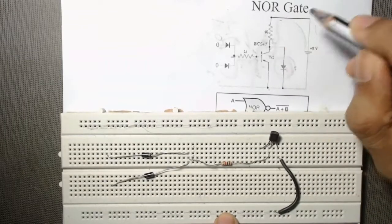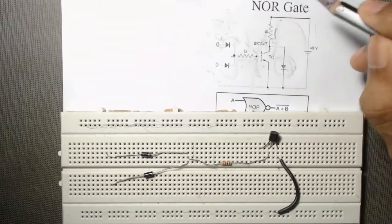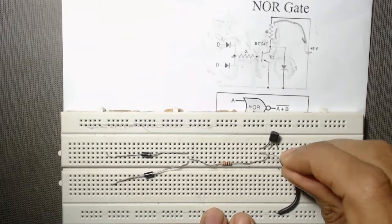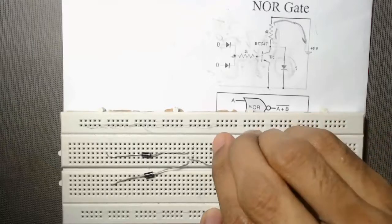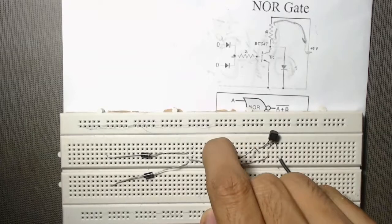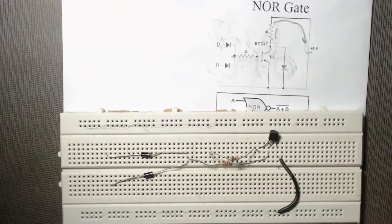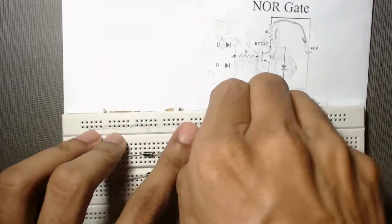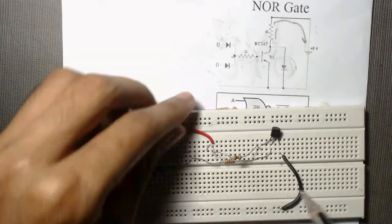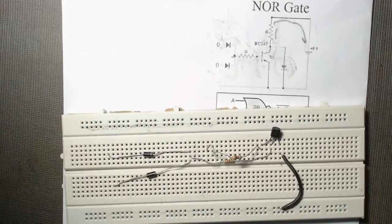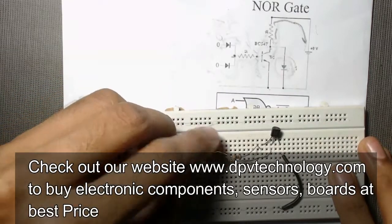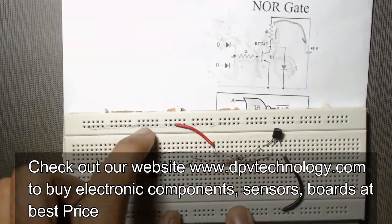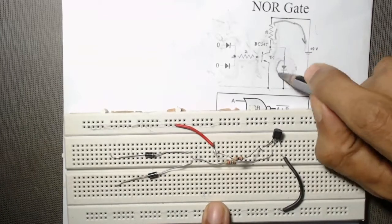From the collector of the transistor, another 1k resistor is connected, and the other terminal of that resistor is connected to the positive terminal of the battery. We connect this resistor from the collector terminal and connect a wire from the other terminal to our VCC row, where we will connect the positive terminal of our battery.